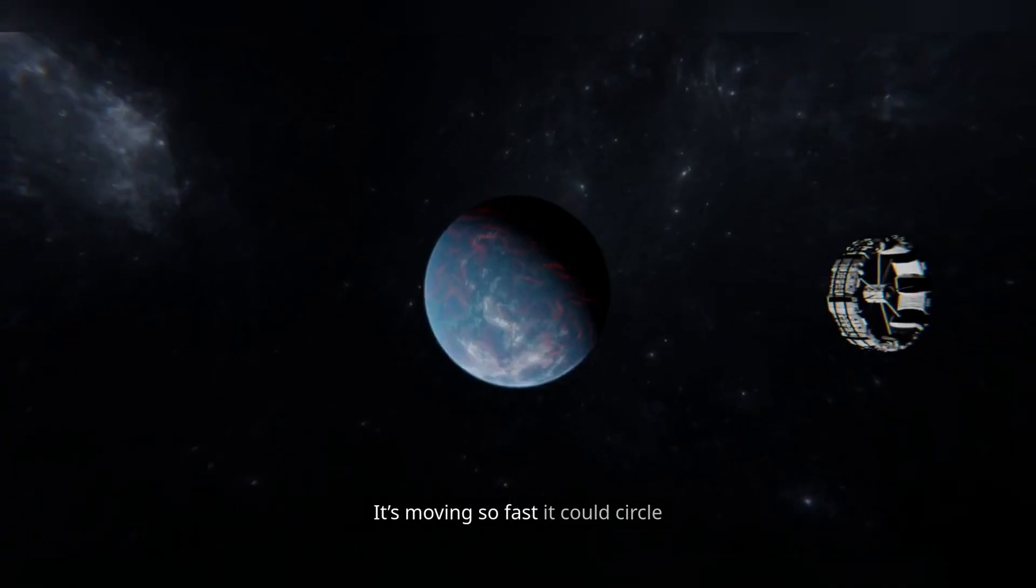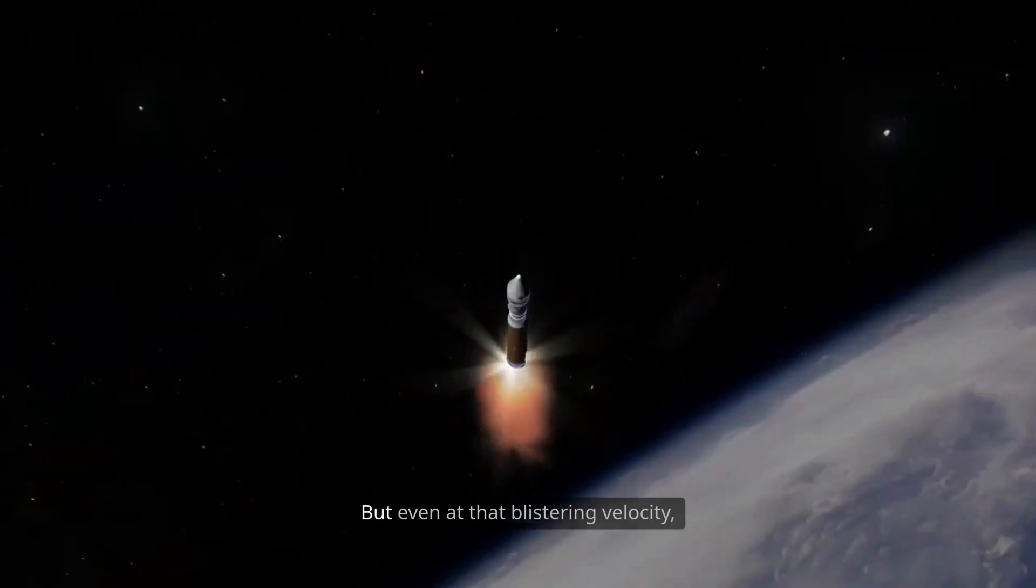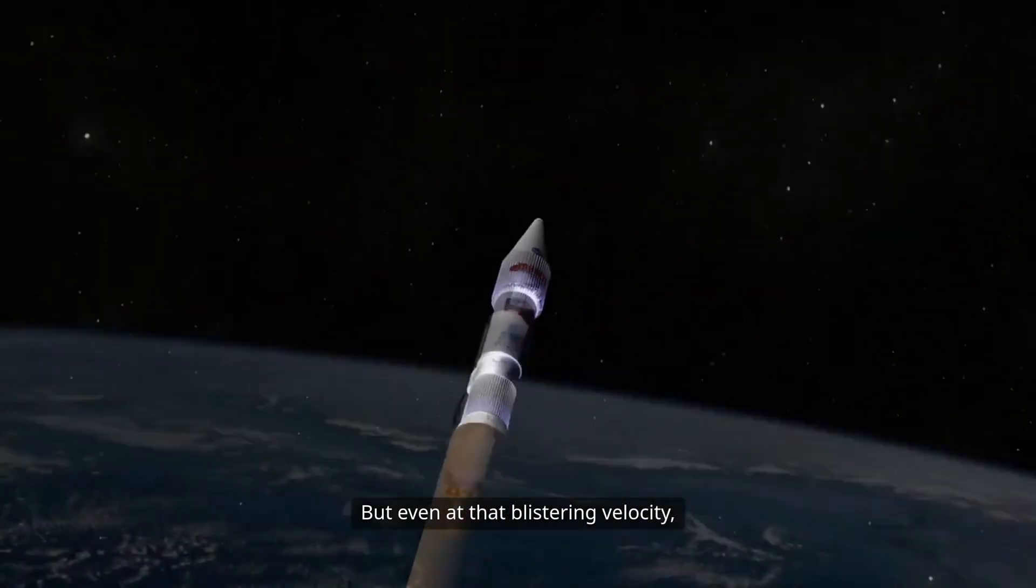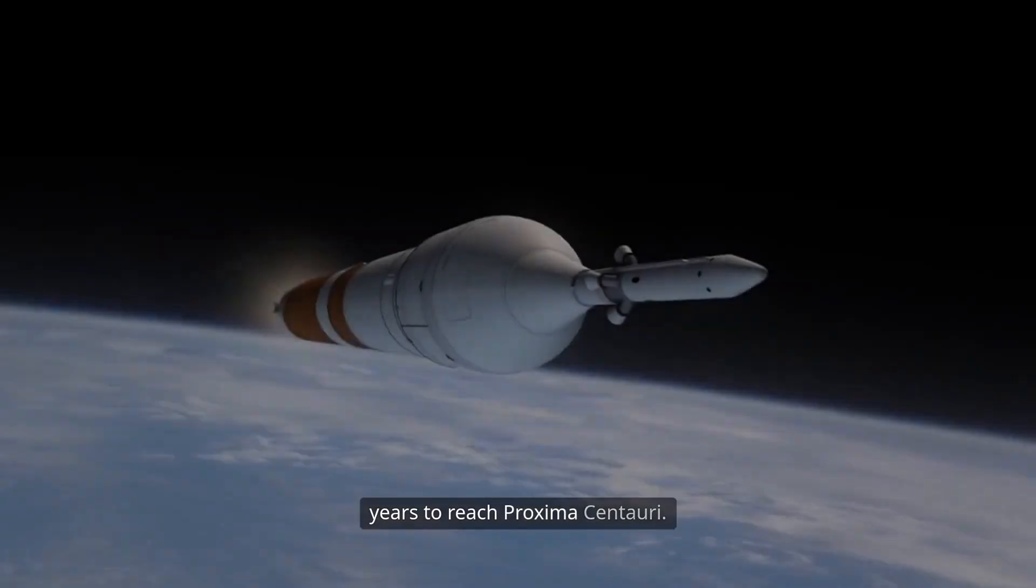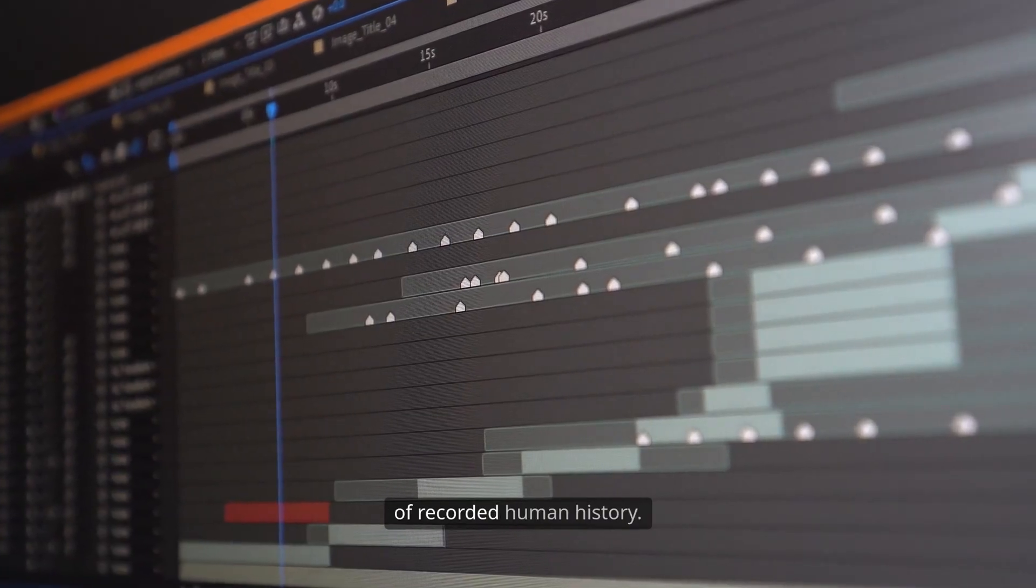It's moving so fast it could circle Earth 17 times in one hour. But even at that blistering velocity, it would still take over 6,600 years to reach Proxima Centauri. That's nearly the entire length of recorded human history.